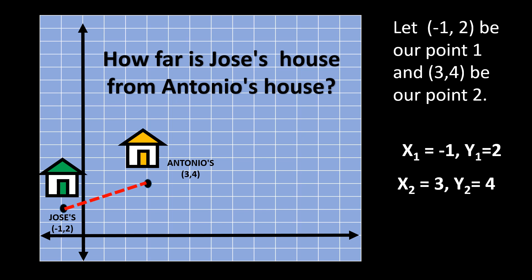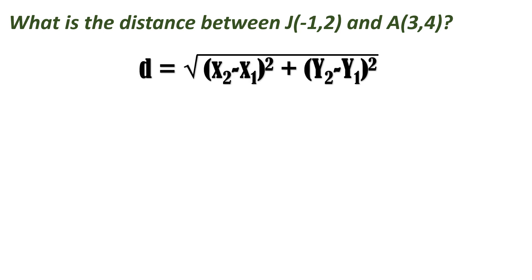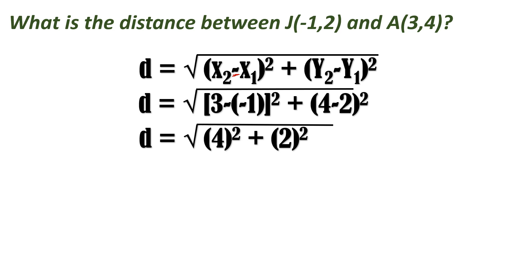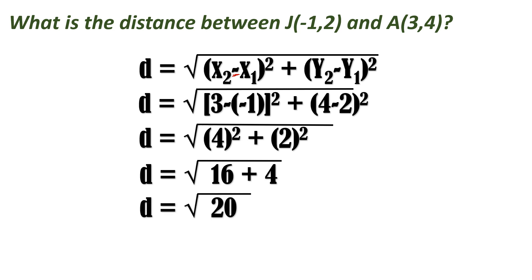Let's substitute the values. In the formula, we get 3 minus negative 1 — don't forget there's a minus sign in the formula — so 3 minus minus 1 becomes 3 plus 1, then squared. And 4 minus 2 is 2, then squared. Solving the exponents: 4 squared is 16, plus 2 squared is 4. Adding: 16 plus 4 gives us square root of 20.